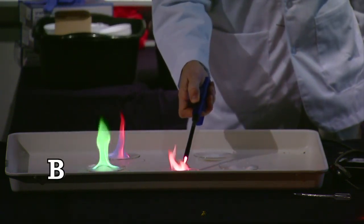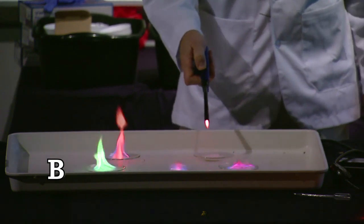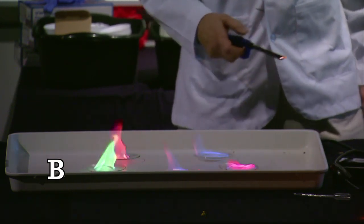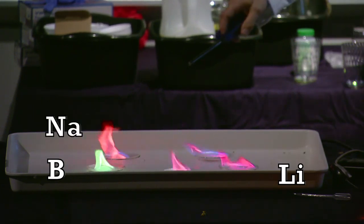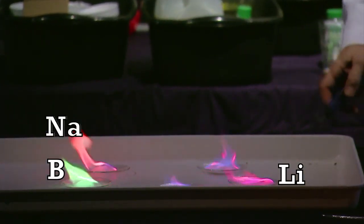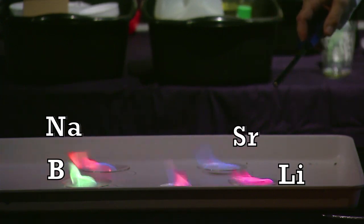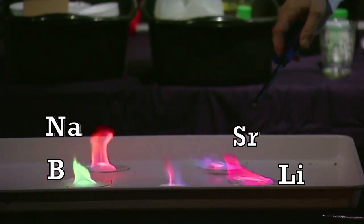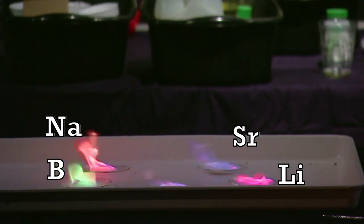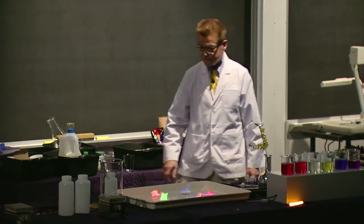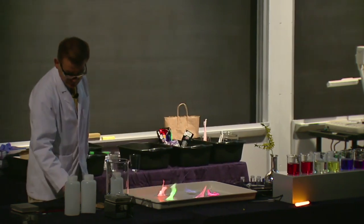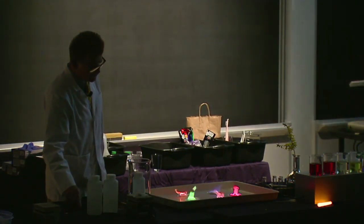So the boron is a nice green color. The lithium is a beautiful red. The sodium back here is a yellow. We've got a little bit of strontium, which is kind of the bluish red. I think the blue is probably the methanol, and the potassium is a little bit of a violet with a yellow color. Can you see those?